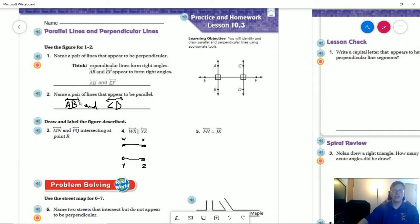We want to make sure because they are lines that we put our arrows at either end of the line that goes above them to designate them as being lines instead of either rays or line segments.